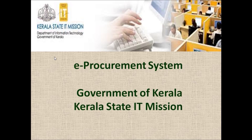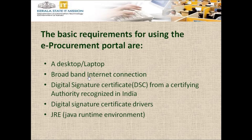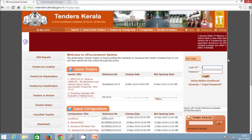The eProcurement website eTenders.Kerala.gov.in can be accessed online from any web browser like Internet Explorer 8, Google Chrome, or Mozilla Firefox. The basic requirements for using the eProcurement portal are a desktop or laptop, broadband internet connection, a Digital Signature Certificate (DSC) from a certifying authority recognized in India, DSC certificate driver, and JRE — Java Runtime Environment.